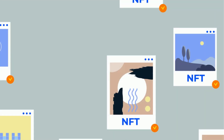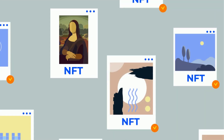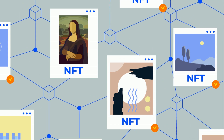If da Vinci had used the blockchain to make this digital Mona Lisa as an NFT, he wouldn't have had this issue. The NFT Mona Lisa would have a unique piece of code attached to it, and da Vinci would always be able to point to this unique piece of code to prove it's the original. And because the blockchain is open to everyone, anyone else in the world could look at the NFT and verify it's the original one too. Pretty cool, right?